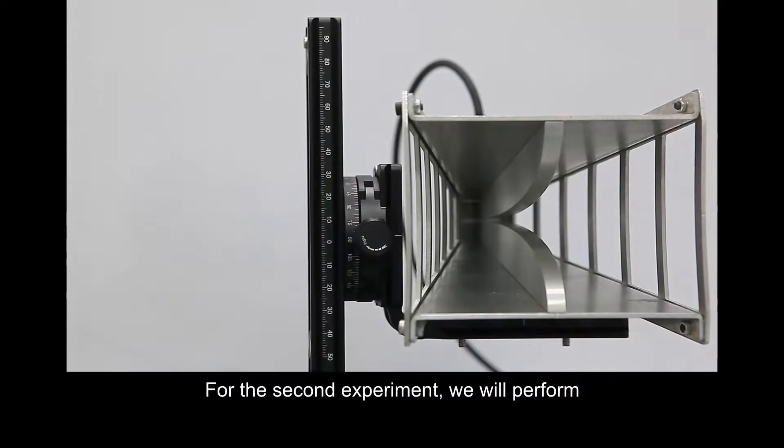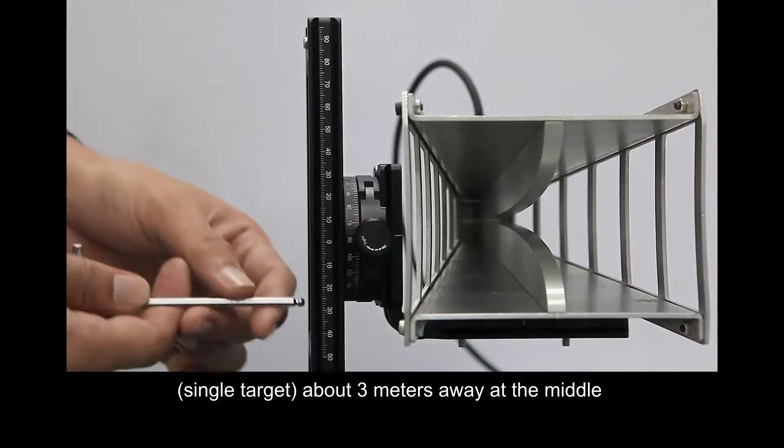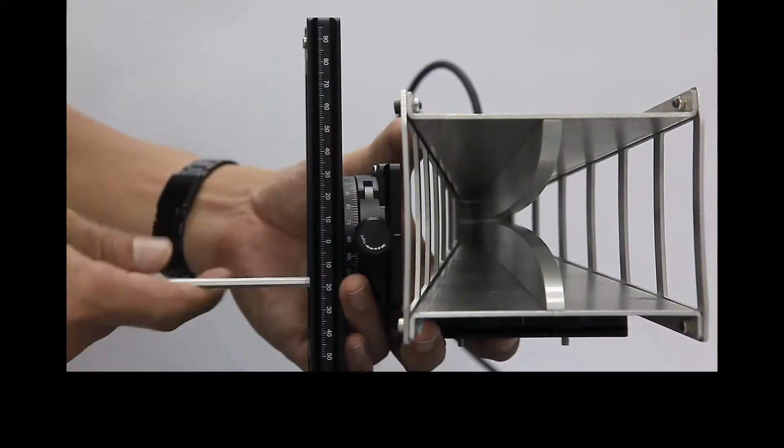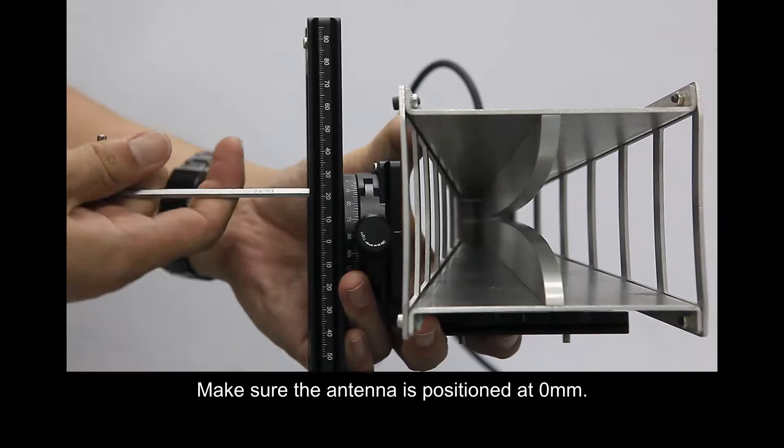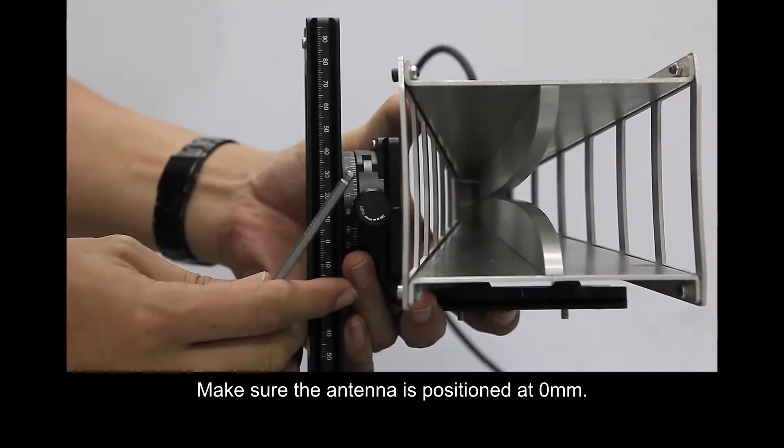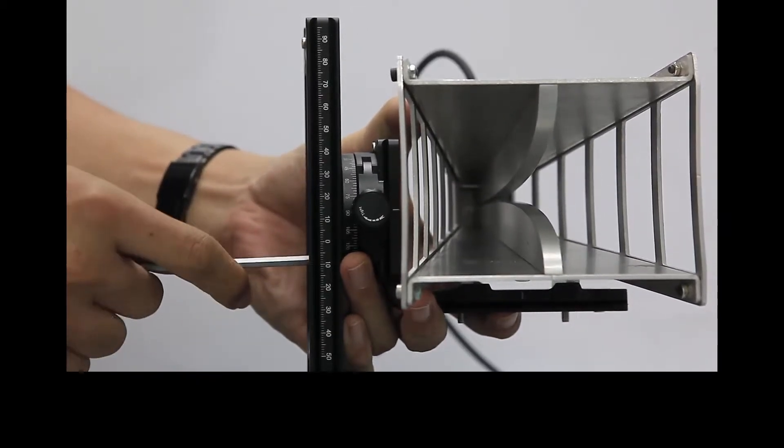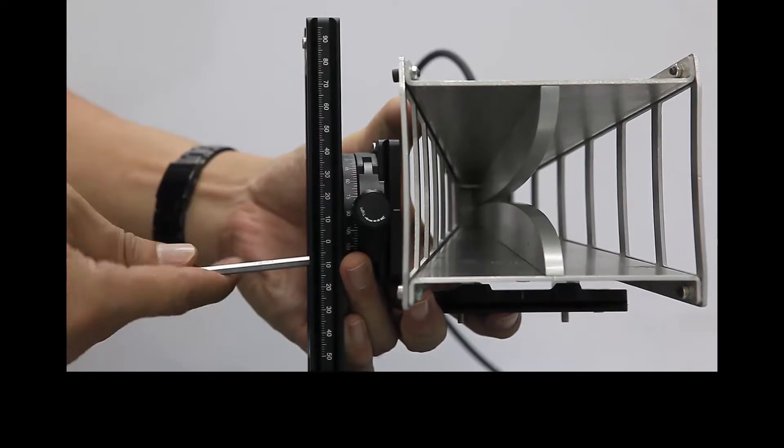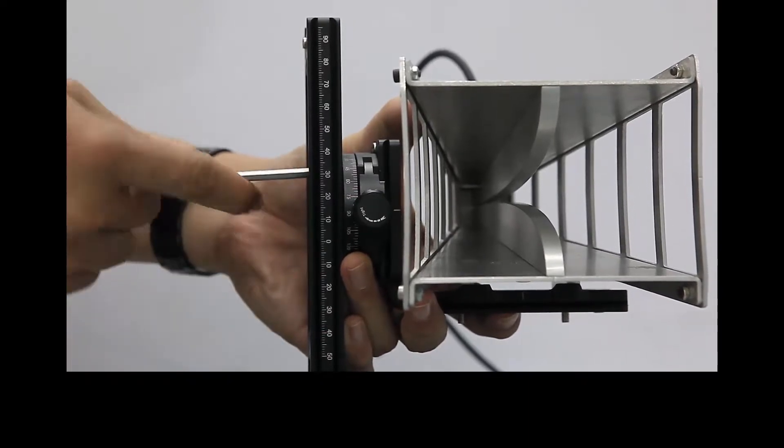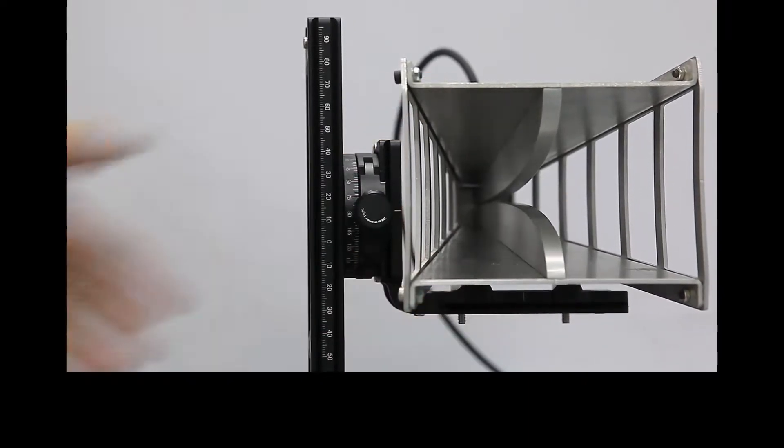For the second experiment, we will perform the single-pass InSAR experiment. Repeat the test by placing an external target, single target, about 3 meters away at the middle of the scene to be scanned. Make sure the antenna is positioned at zero millimeters. Then perform the scan.